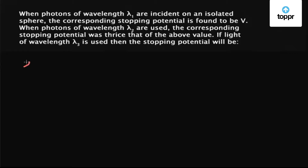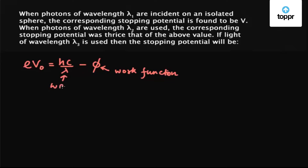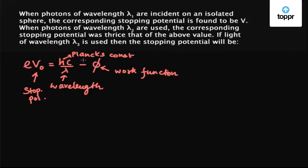The relation is given by eV₀ = hC/λ - φ, where φ is the work function, λ is the wavelength, V₀ is the stopping potential, h is Planck's constant, and C is the speed of light.